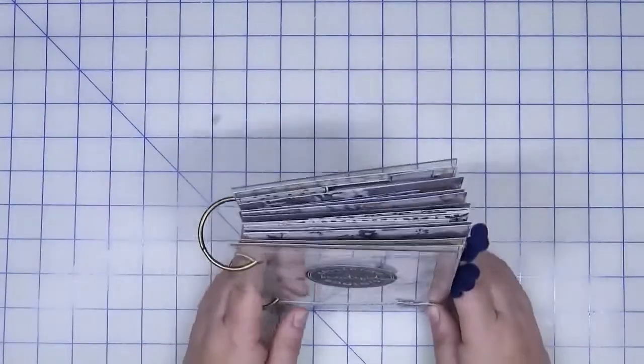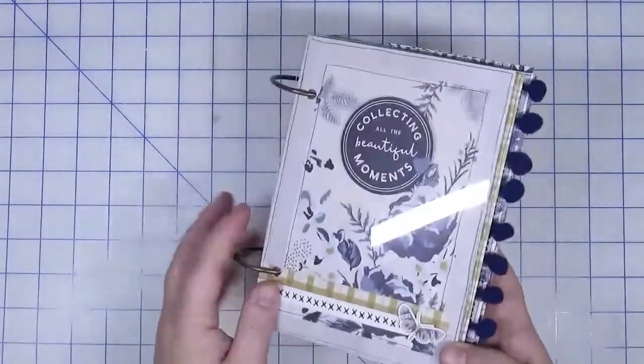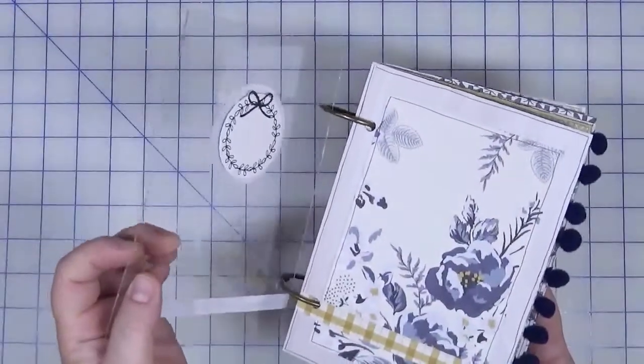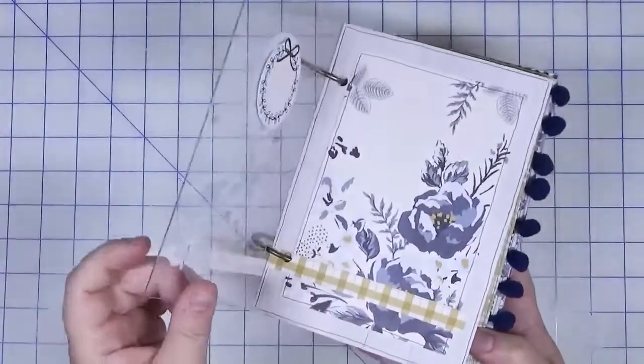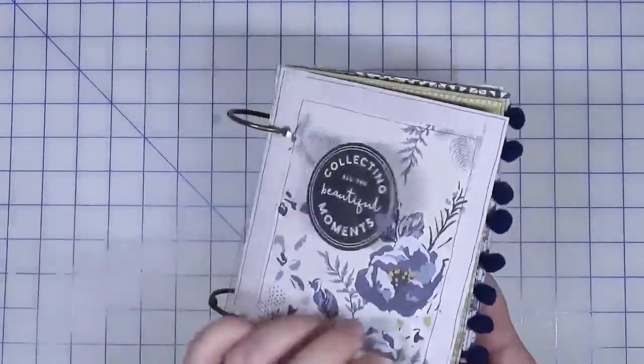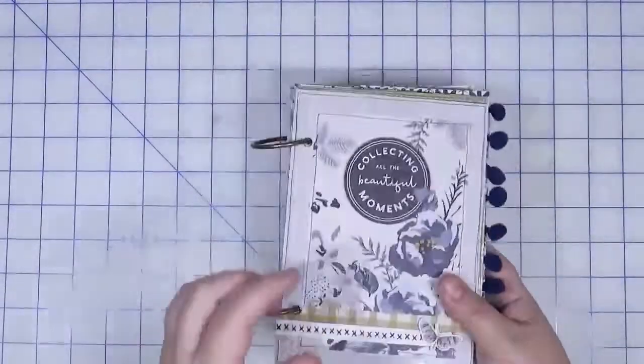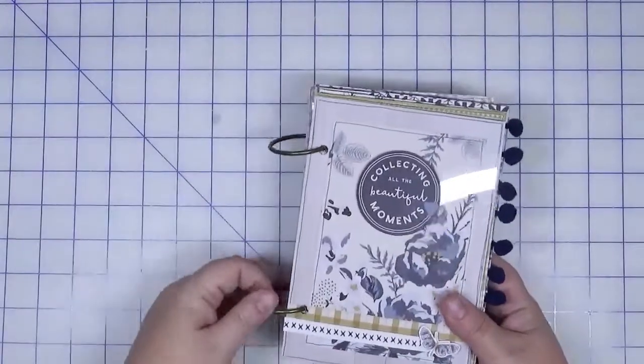This one's really fun. It has an acrylic cover to it, like a plexiglass or acrylic sheets. You could probably just buy these at the hardware store or whatever, but they've been trimmed down to about five by seven, and then a couple binder rings to make this album.